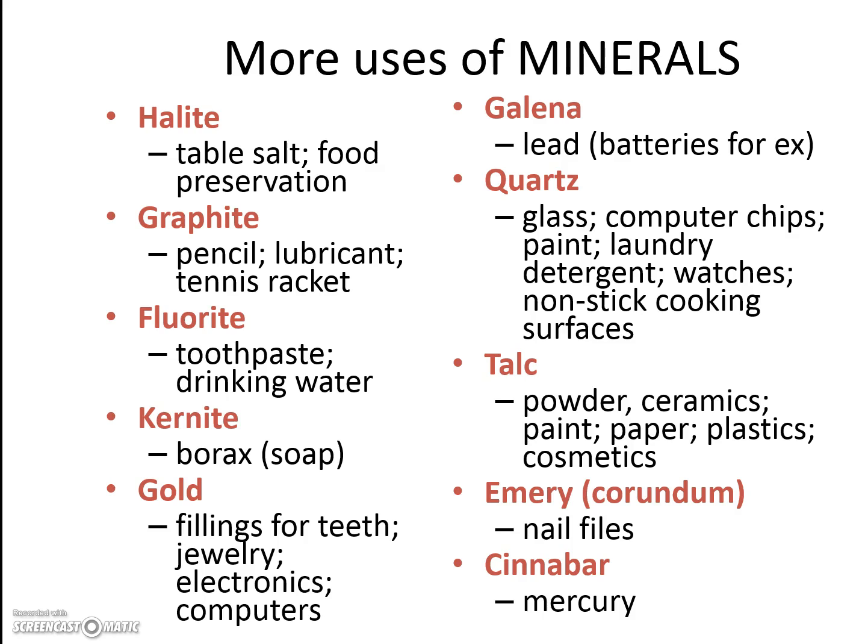Some more minerals: halite is just table salt — it's kind of funny that you put a mineral on your food or even your french fries. Graphite is used for pencils. Fluorite is in your toothpaste. Kernite is used for soap. Gold is used for teeth, jewelry, electronics, and computers. Galena is lead, used for batteries. Quartz is used for glass, paint, laundry detergent, and cooking surfaces.